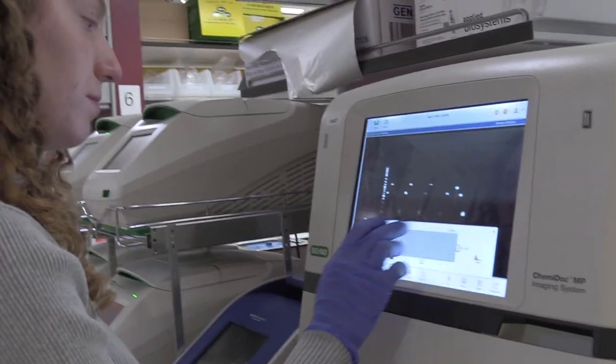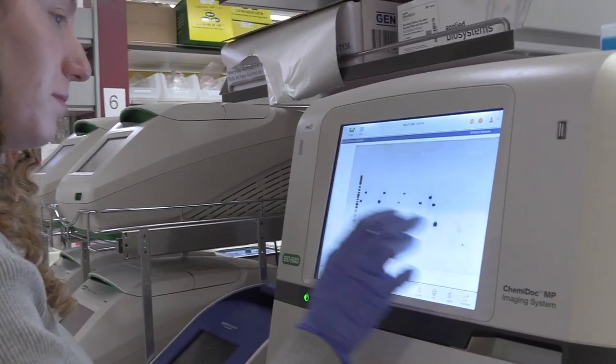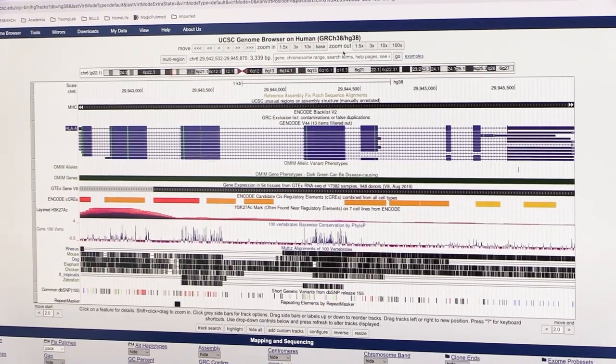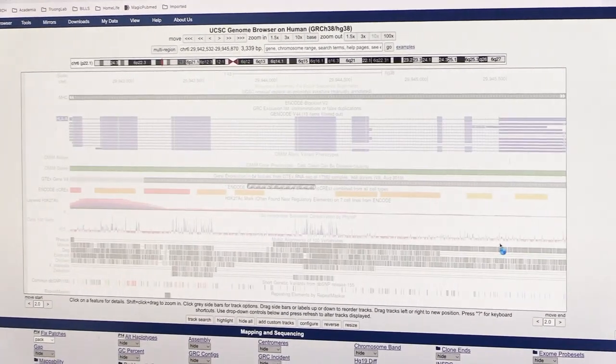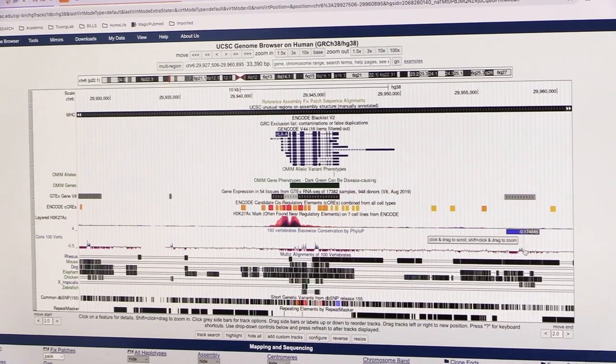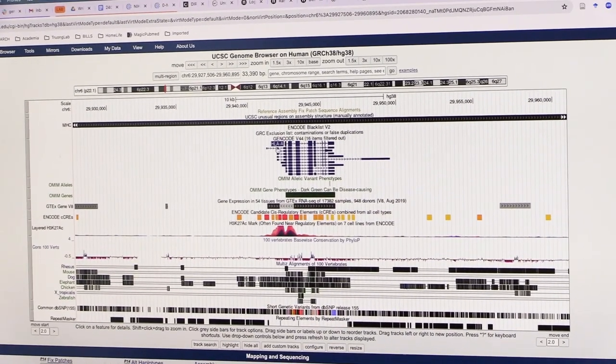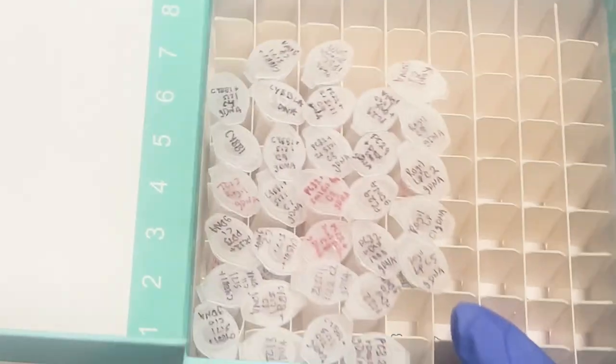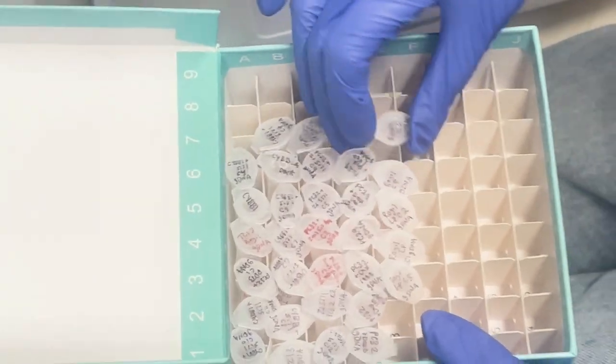So how do you even do large-scale gene editing? We start on the computer. We have to basically design what we're making. So we have a program that allows us to visualize the DNA bases and the constructs that we're making. It makes it a lot easier to design and order whatever primers we need or DNA fragments.